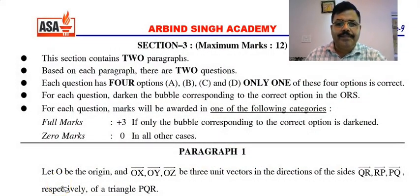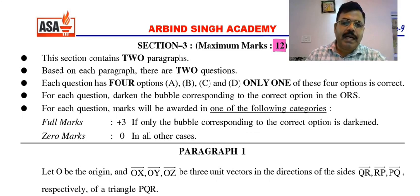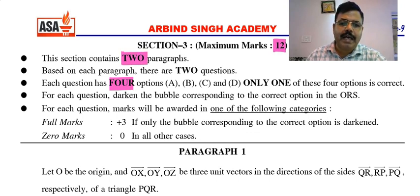Hello, welcome to Arvin Singh Academy. We are going to discuss IIT JEE 2017 Paper 2, Part 3 today. We have already discussed Part 1 and Part 2, and I hope you have understood those solutions. In Part 3, questions are for 12 marks total — four questions across two paragraphs — and for each correct response there will be three marks.